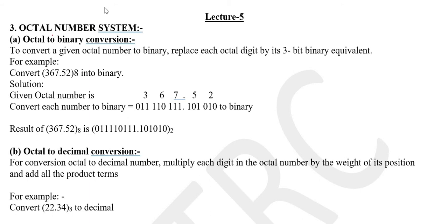Now we are starting with octal number system conversion. First, we have to convert the octal number system to binary. The process is the same as binary to octal — when we converted binary to octal, we created 3-3 groups. So when we convert an octal number to binary, we write each digit in 3 bits. To convert a given octal number, replace each octal digit by its 3-bit binary equivalent using the 4-2-1 code.